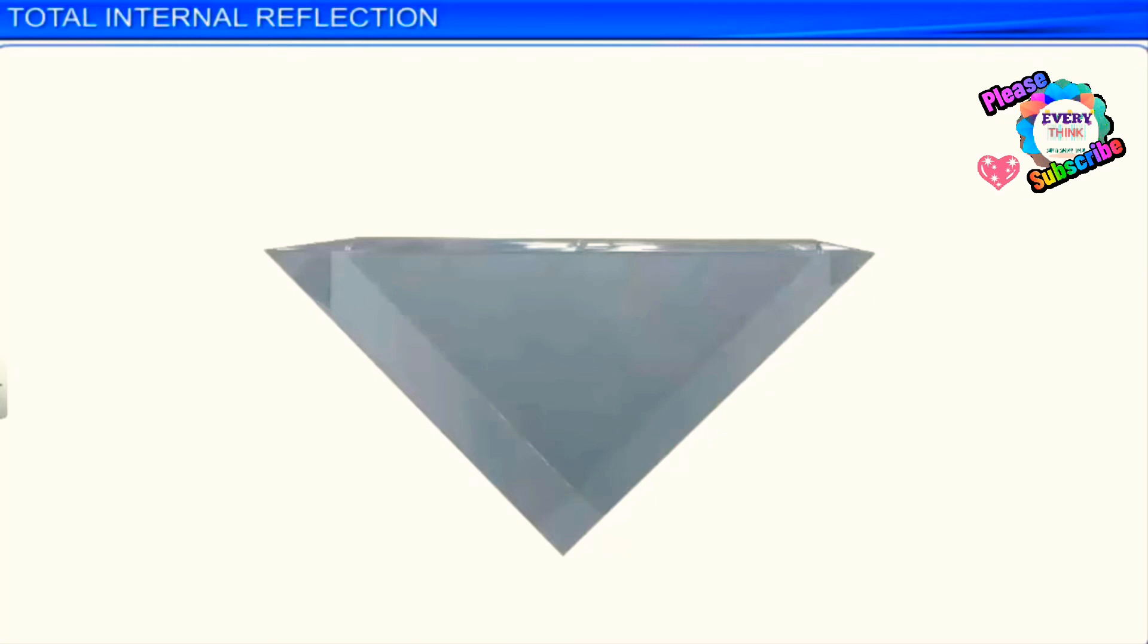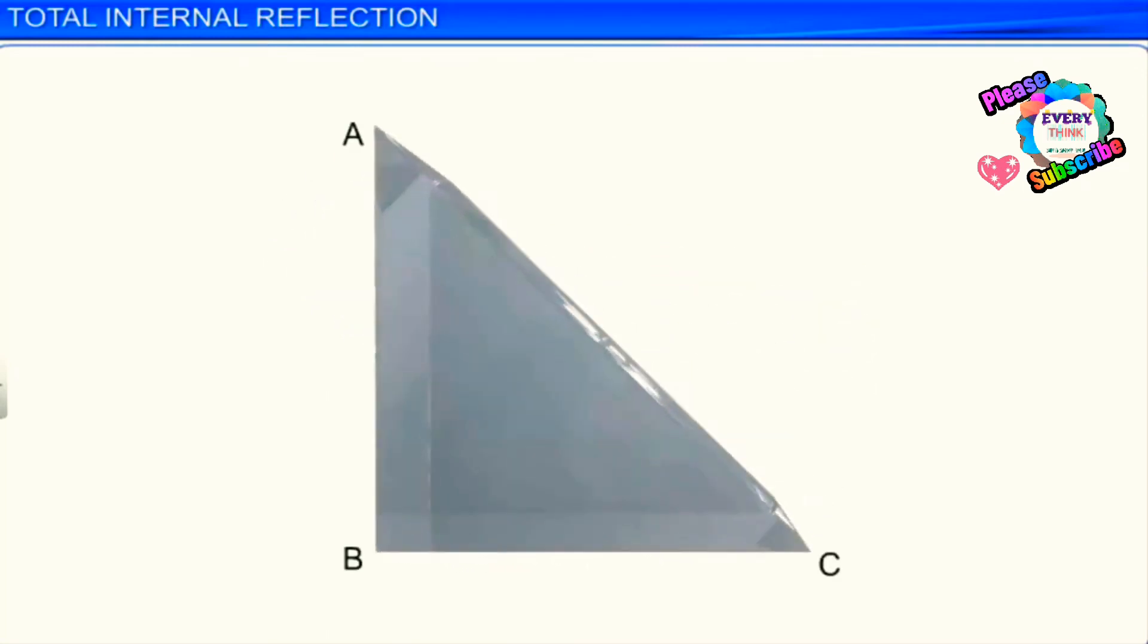A right angled prism, whose critical angle is less than 45 degrees, can be used to deflect light at a right angle. Light incident normally on side AB passes without deviation, and incident on side AC at an angle 45 degrees. Since the angle of incidence is greater than the critical angle, the light is totally internally reflected, and is deviated from its original path by 90 degrees.